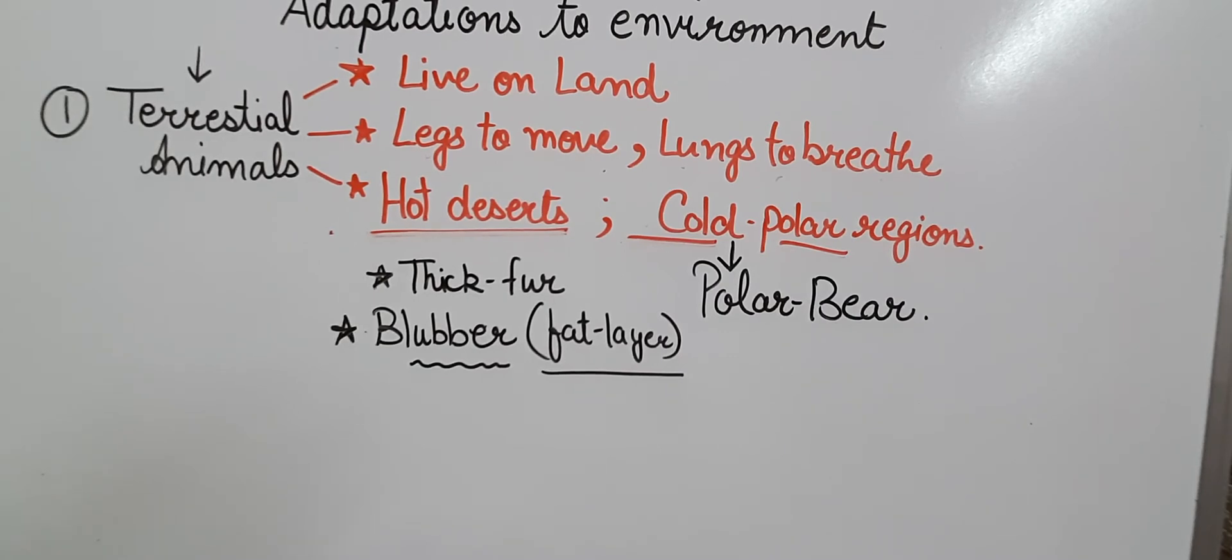This fat helps the animal to keep its body warm during the extreme cold environments. So camel are capable to survive in hot desert, and the terrestrial animals like polar bears, penguins or seals, they can survive in very cold regions like polar regions. So it is clear that these animals have adapted themselves according to the environment where they are living for so many years.